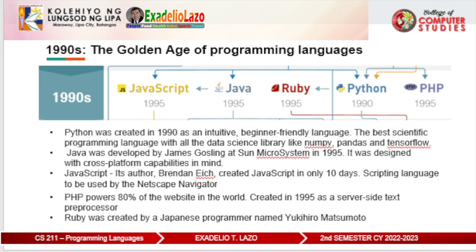JavaScript was created in the same year as Java. It was originally intended to be the scripting language used by Netscape Navigator. Its author Brendan Eich created JavaScript in only 10 days. JavaScript's object system is interestingly prototype-based instead of class-based. The language has undergone drastic changes as it became more and more mainstream, including the server-side JavaScript runtime Node.js, which enabled the possibility of full-stack JavaScript development.